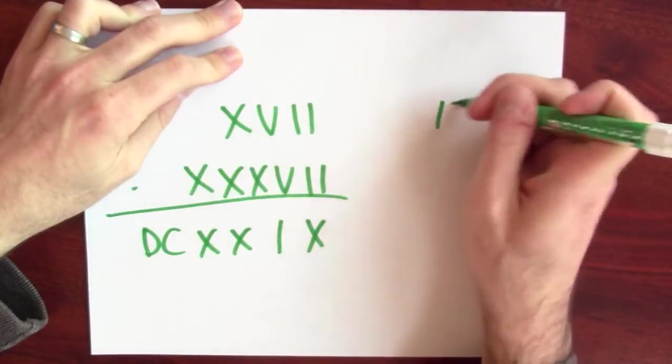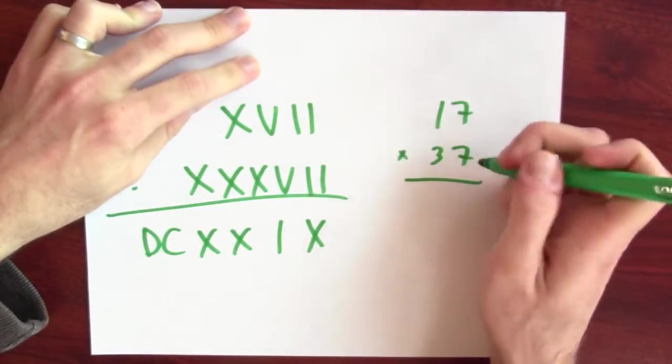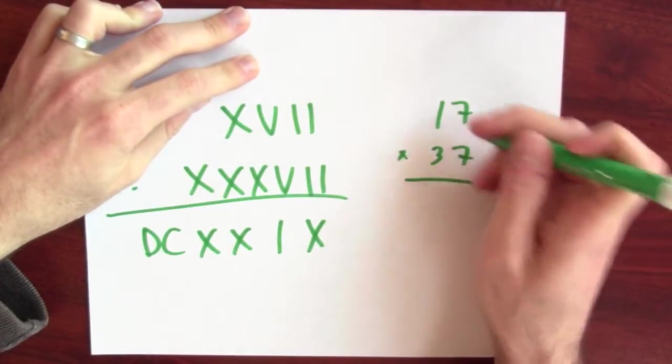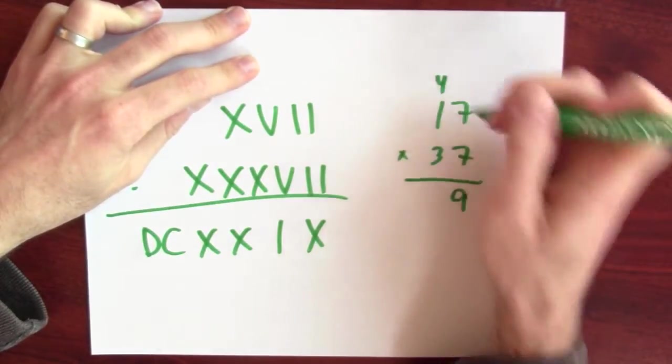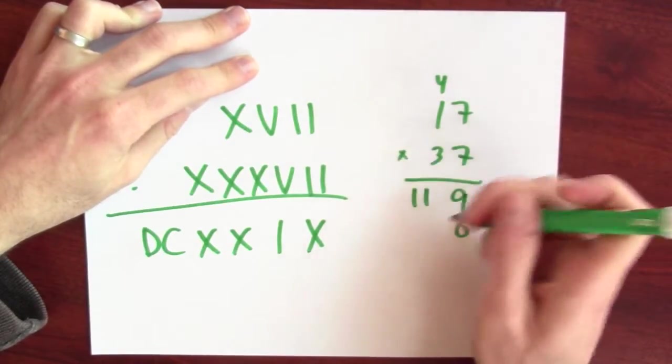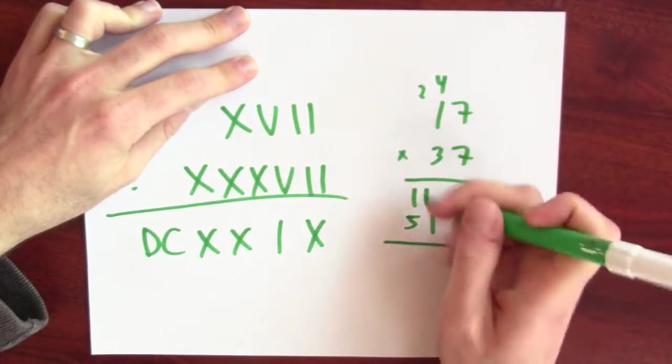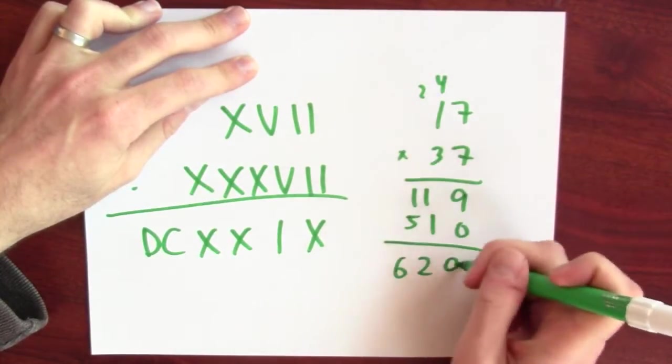Here we've got 17, here I've got 37. If I want to do this multiplication problem, I just have to do these single digit multiplies. 7 times 7 is 49. 7 plus 4 is 11. 3 times 7 is 21. 3 plus 2 is 5. Add these numbers up. 629.